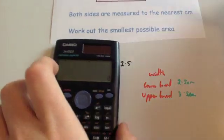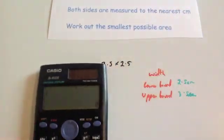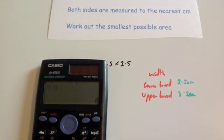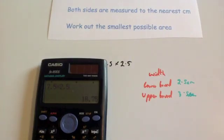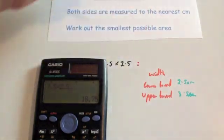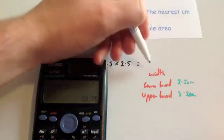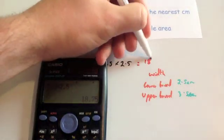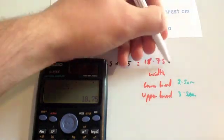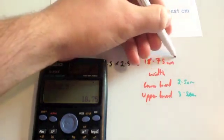7.5 times 2.5 gives an answer of 18.75. So the smallest possible area would be 18.75 centimetres squared.